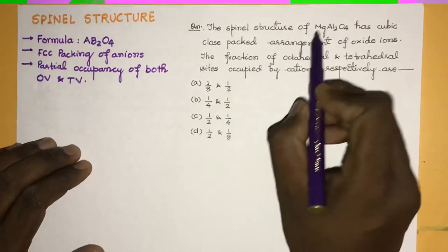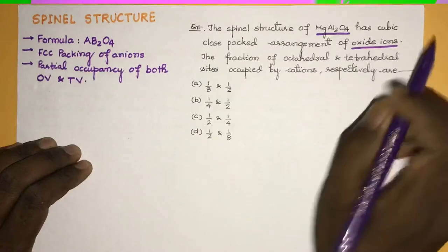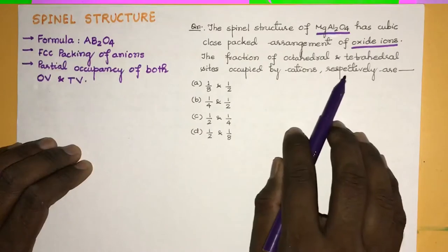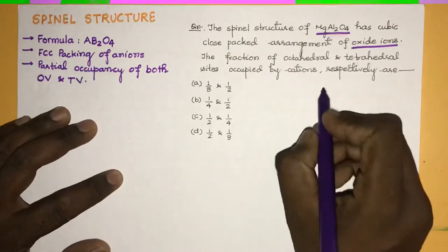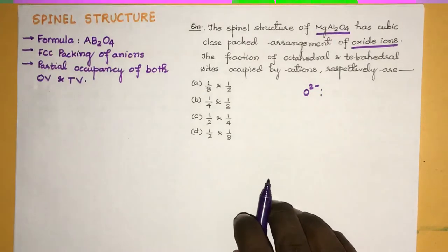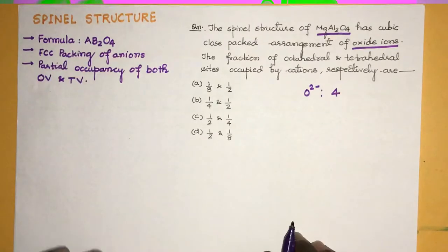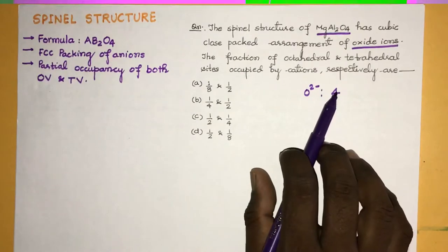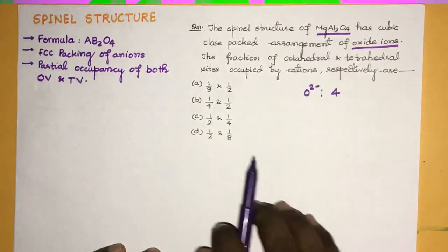The spinel structure of MgAl2O4 has a cubic close-packed arrangement of oxide ions. We need to find the fraction of octahedral and tetrahedral sites occupied by cations. Since the oxide ions form an FCC lattice, the effective number of atoms per unit cell is 4, so oxygen will effectively be equal to 4.